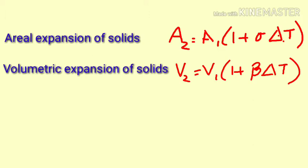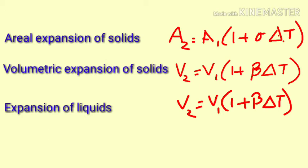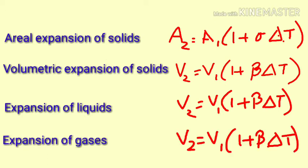Likewise, when the liquid is heated, its volume increases. So you have V2 is equal to V1 bracket 1 plus beta delta T. On similar terms, even in the gaseous form, the volume increases. If the temperature increases, so you have V2 is equal to V1, 1 plus beta delta T.